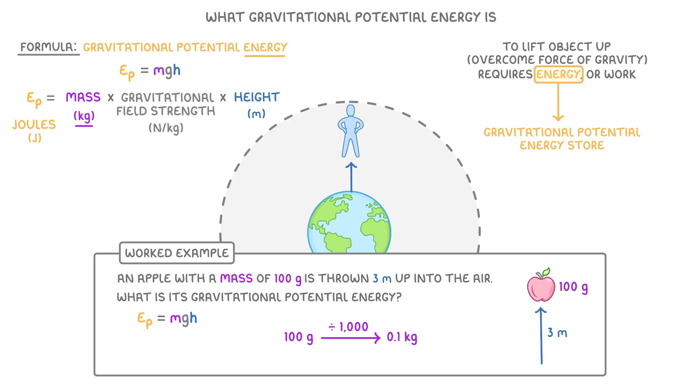Then all we need to do is plug in the values. Our calculation becomes the mass of 0.1 times the gravitational field strength of 9.8 times the height of 3. This gives us 2.94 joules. So the apple gained 2.94 joules of gravitational potential energy.